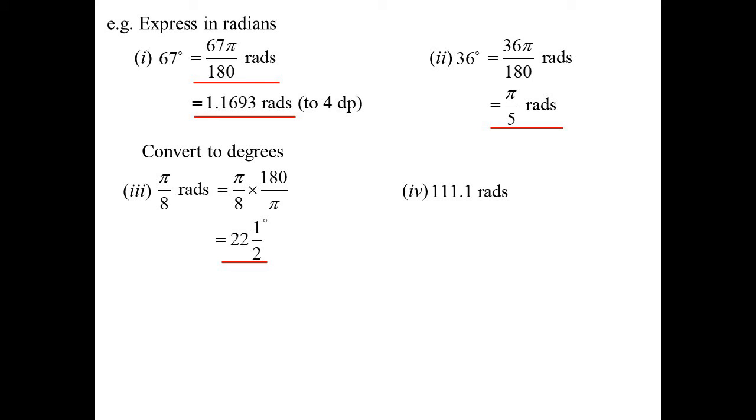Again, there's no reason why pi has to be in it. 111.1 radians. Okay, multiply by 180, divide by pi, even though pi wasn't in the original one, you've still got to divide by pi to get the answer. And it's huge. Look at that. 6,365.6 degrees.